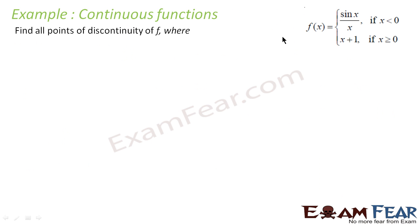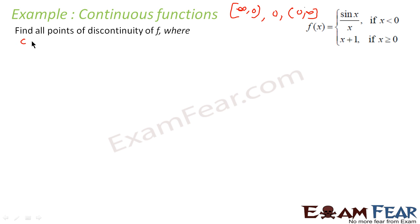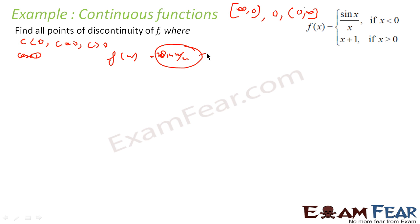Let us take one more example where we define all the points of discontinuity of f, where the function is defined by this case. Here 0 is the point of contention because the function is changing at 0. So the buckets are: minus infinity to 0 (not included), 0 as the second bucket, and 0 to infinity as the third bucket. For case 1, c less than 0, f(x) is sin(x)/x, which is a continuous polynomial function.